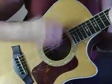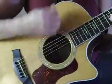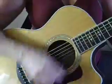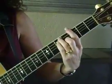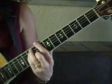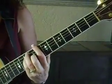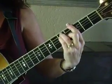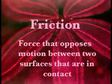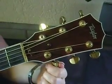Have you ever thought about how science relates to playing the guitar? Watch your fingers as they slide up and down on the strings. This is an example of friction — a force that opposes motion between two surfaces that are in contact. This is also an example of friction because when you tighten the screws, friction holds the strings in place.